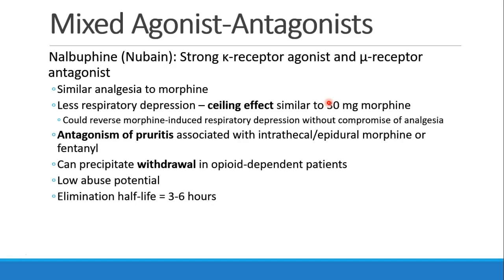Nalbuphine, or Nubain, is a strong kappa receptor agonist and a mu receptor antagonist. The analgesic effect occurs through the kappa receptor, and it is able to achieve similar analgesia to morphine but with less respiratory depression, with a respiratory ceiling effect of about 30 milligrams of morphine equivalent, probably because of its mu receptor antagonist properties. In fact, morphine-induced respiratory depression may be reversed with a dose of Nubain without taking away analgesia. Nubain is often used to take away the pruritus associated with morphine, especially in the intrathecal or epidural space, and is commonly used in OB anesthesia. If a patient is already dependent on a strong opioid like morphine or heroin, Nubain could actually precipitate withdrawal. By itself, Nubain has a low abuse potential and an elimination half-life of three to six hours.